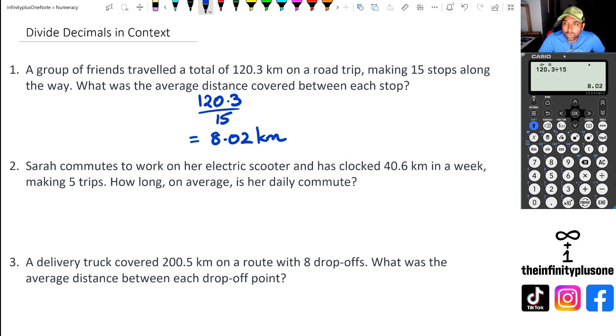Then we're looking at question number two. Sarah's clocked in 40.6 kilometers from five trips, and we want to know what's her daily commute. So we've got 40.6 divided by five, and we're going to get 8.12 kilometers.